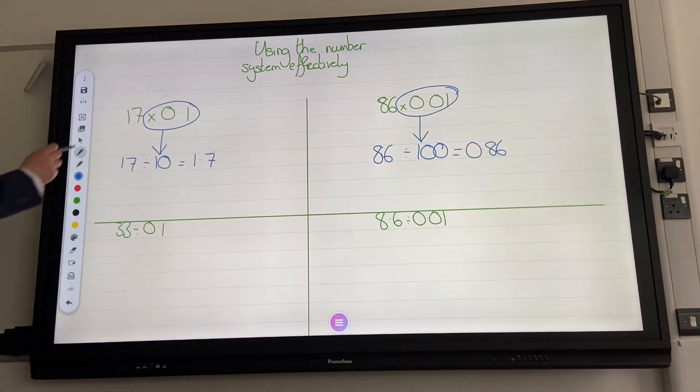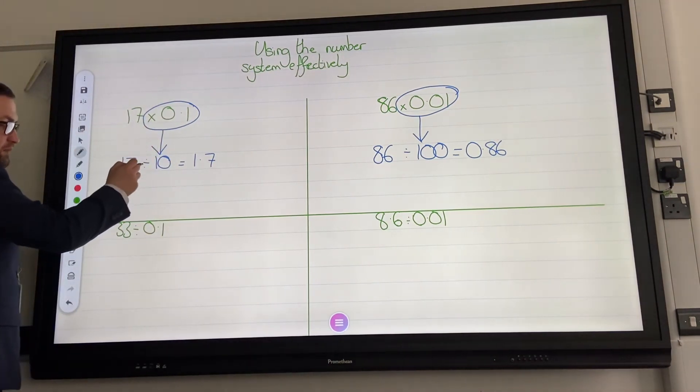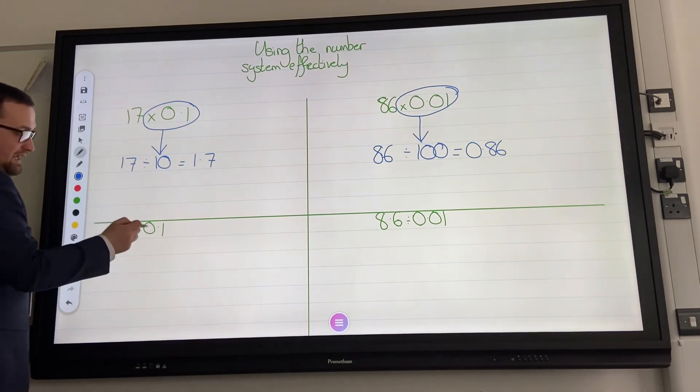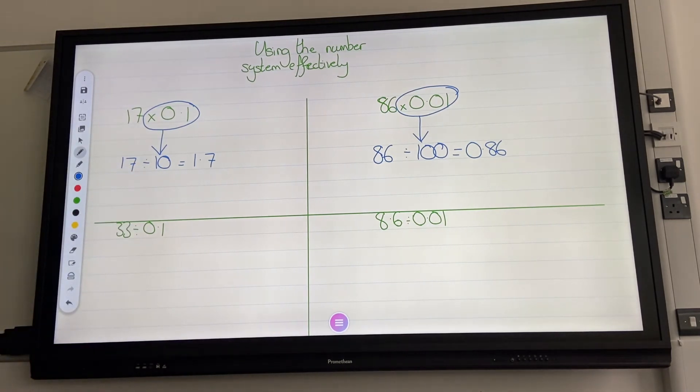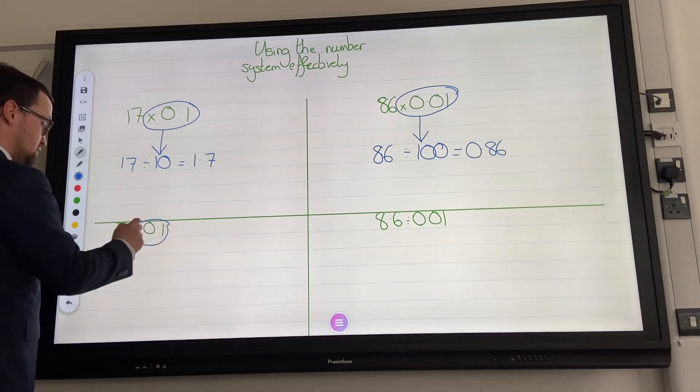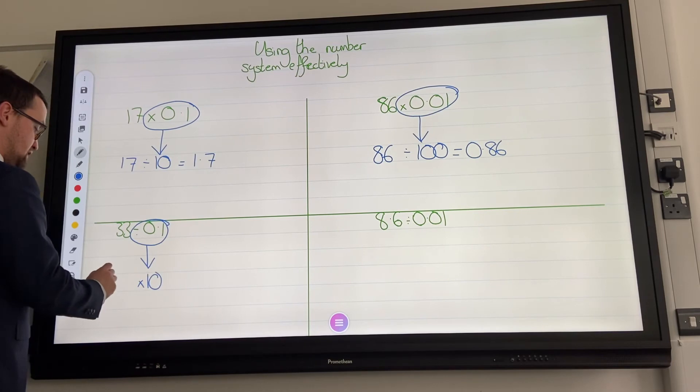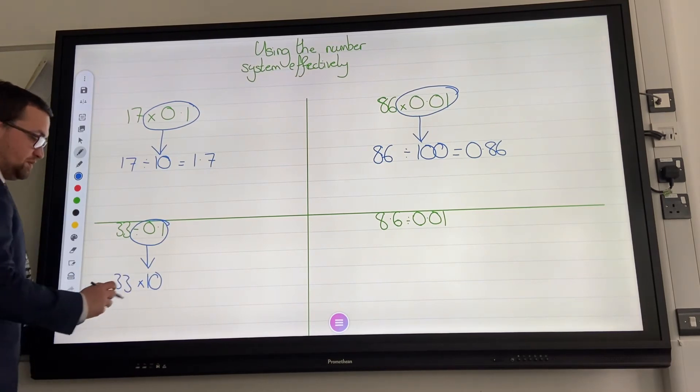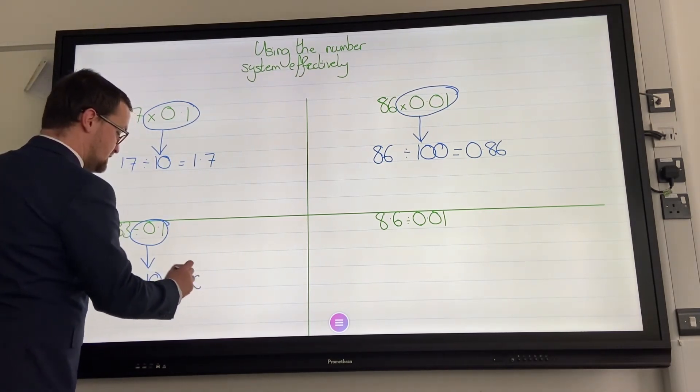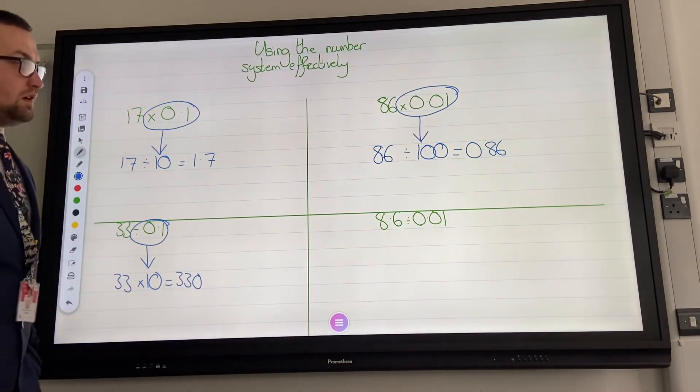when we were timesing by 0.1, we divide by 10. So, if we're dividing by 0.1, what do you reckon we're going to do? We are going to times by 10. So, you've got 33 times by 10, which is 330.